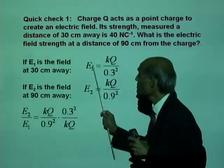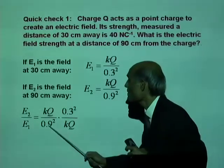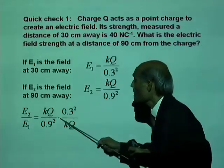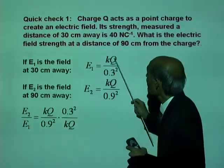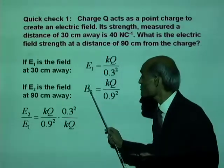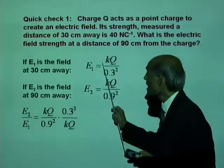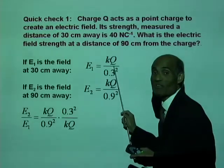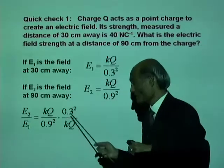Look at this. E2 divided by E1 is KQ divided by 0.9 squared. And instead of now dividing by this, I'm going to multiply which is reciprocal. Multiply 0.3 squared divided by KQ. Do you understand that? E2 divided by E1 is this quantity divided by this quantity. And division by a fraction is the same as multiplication by its reciprocal. That's what this is.